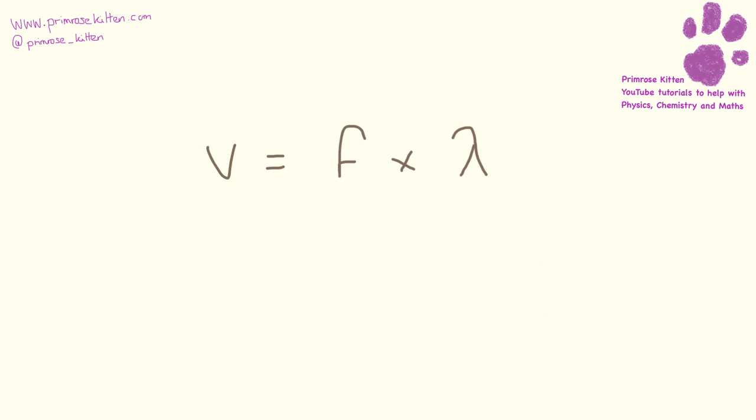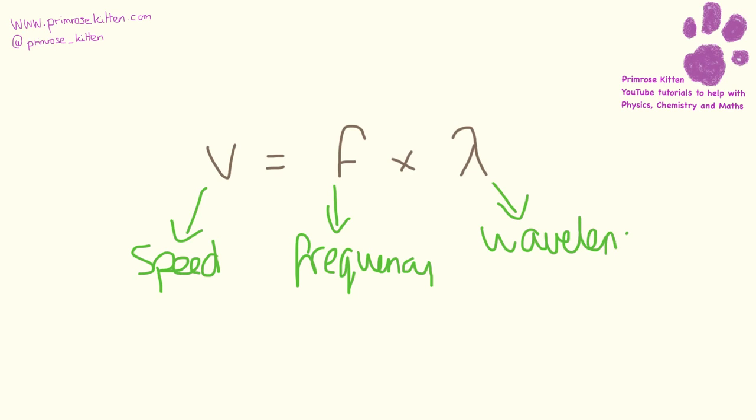When we're talking about the wave equation, we have speed. We have frequency. And then we have lambda over here which is wavelength. Speed is measured in meters per second. Frequency is measured in hertz. And meters is measured, a wavelength is measured in meters. And time is measured in seconds. Now for frequency, it's really, really important that you have a capital H and lowercase set. Anything else will not get you the marks.